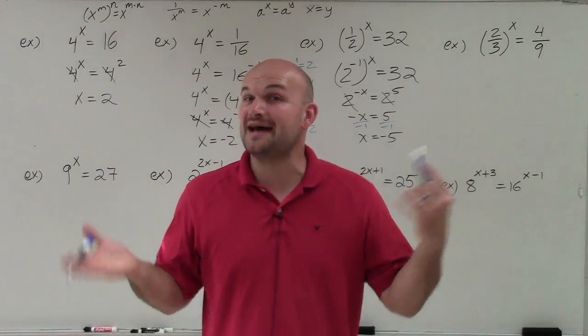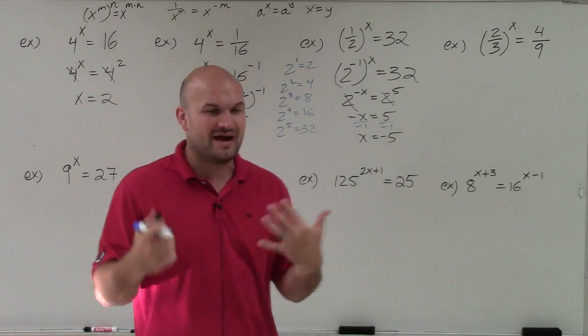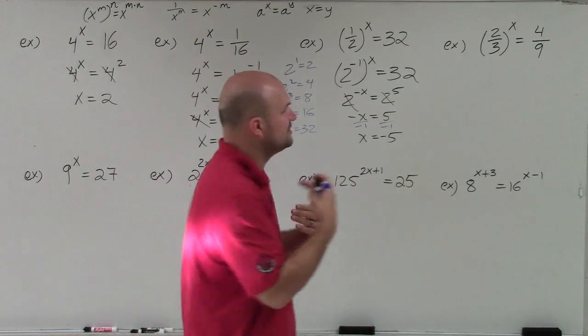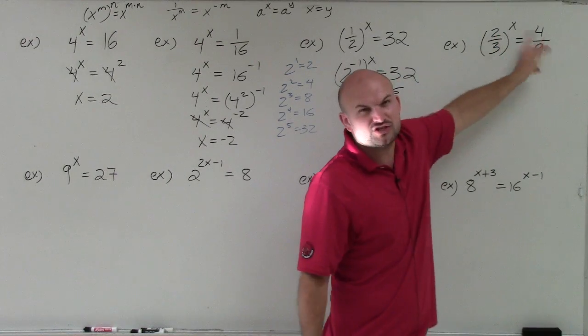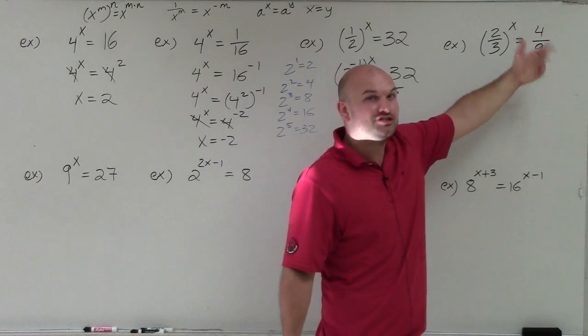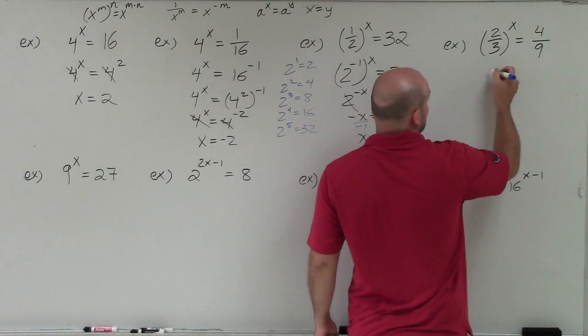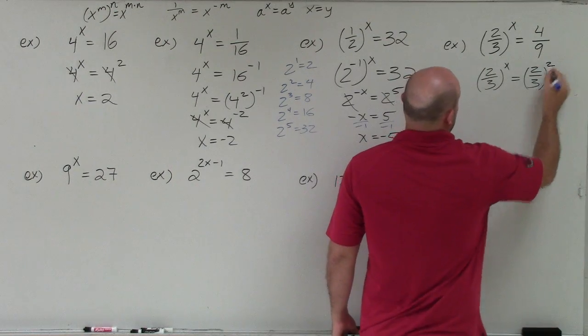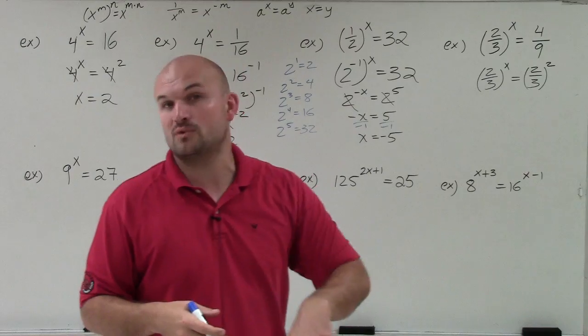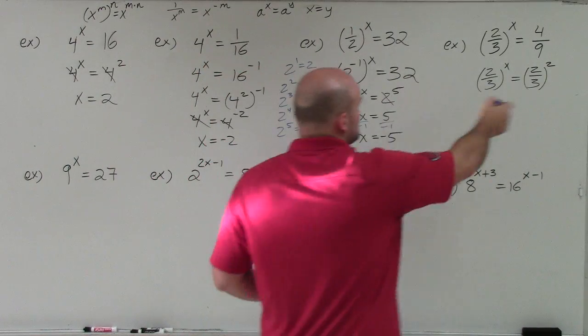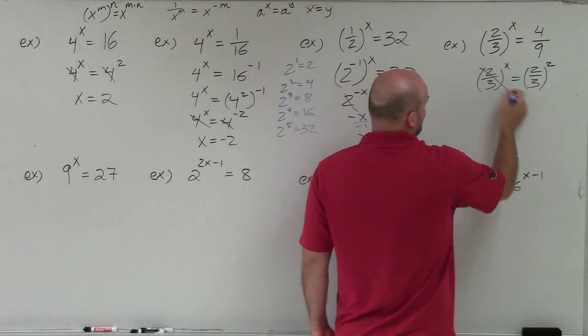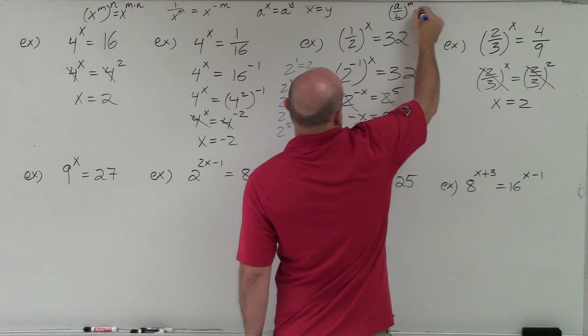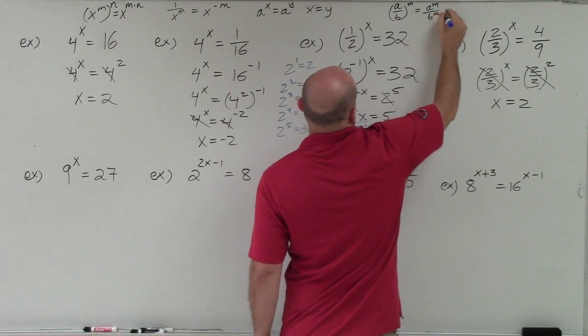In the next example, you can see now we have a fraction on both sides. Fractions, a lot of times students just freeze up. They see a fraction, they freeze up. But we can break down the fraction into the numerator and the denominator and see how the numerator and denominator are related on both sides. From our numerators, you can see just 2 to 4 is being squared. From 3 to 9 is just being squared. So all I can do is I can rewrite this as 2 thirds to the x equals 2 thirds squared. Because when you're squaring a fraction, you square the numerator and you square the denominator. Or whenever you have a fraction raised to a power, that power distributes to the numerator as well as the denominator. So now they have the same base, and I can say x is equal to 2. And that rule looks like this: a over b to the m equals a to the m over b to the m.